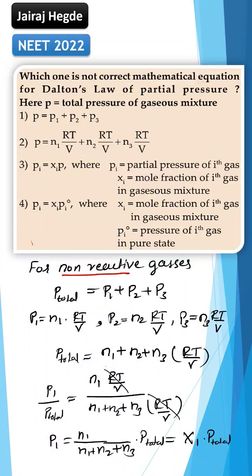According to Dalton's law of partial pressure, for all non-reactive gases, the total pressure of a gas is the sum of individual partial pressure. So, that is why P is equal to P1 plus P2 plus P3.